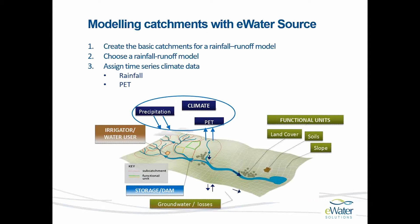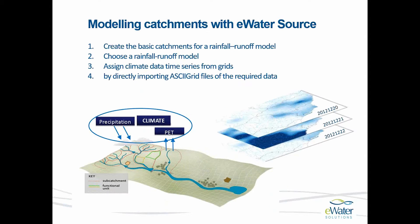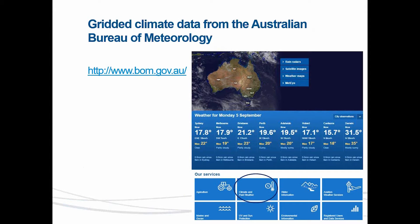Normally what happens with a Source catchments model is precipitation and PET data is imported using a time series from gauges. But it can also happen that one has access to daily gridded data that has been interpolated from rain gauges or remote sensing in some way. eWater Source does allow importing these grids directly as ASCII files into a model. I'm going to use data from the Australian Bureau of Meteorology as an example of how you would import this data.